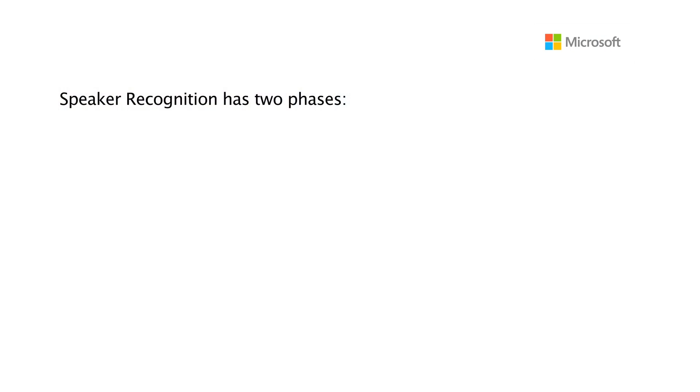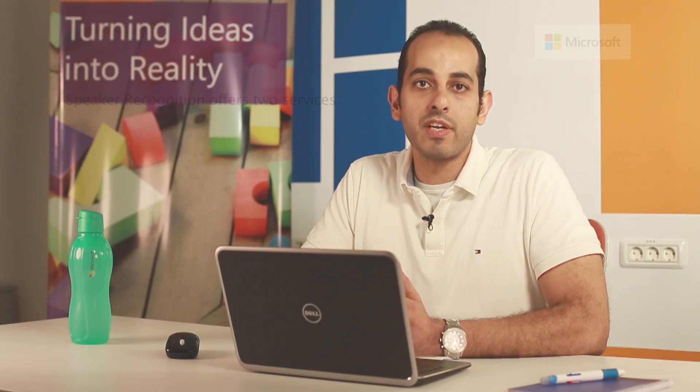In general, Speaker Recognition has two phases: enrollment and recognition. During enrollment, the speaker's voice is recorded, and a number of features and characteristics are extracted to create what we call a voice print that uniquely identifies the speaker. These characteristics are based on the physical configuration of the speaker's vocal tract, which are unique. Then comes recognition, during which the provided audio sample is compared against the created voice print and the speaker's identity is verified.